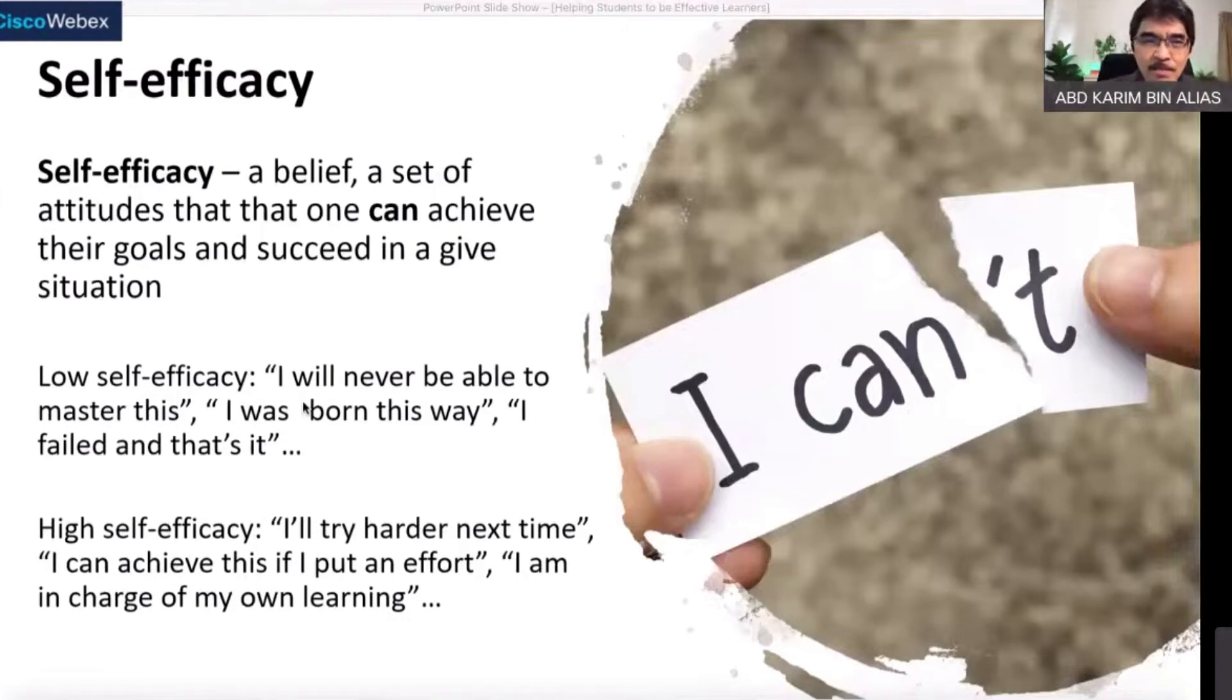If they want to be self-regulated, they must also have self-efficacy, high self-efficacy. When they fail they say 'Okay, I can learn from my failure. If I fail, I will fail forward' - meaning they learned from their mistake.